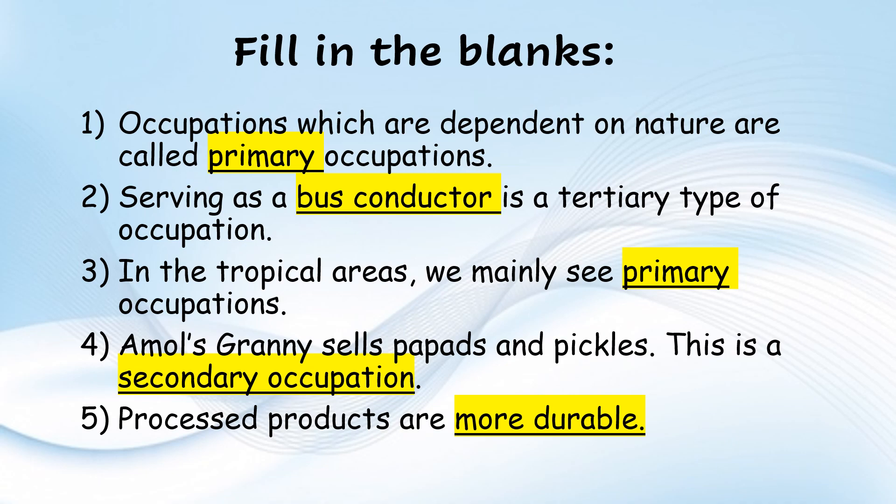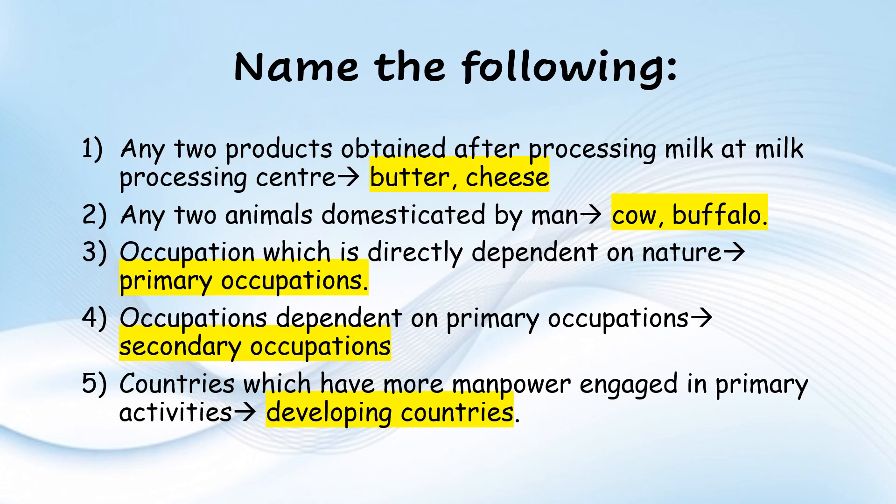Amol's granny sells papads and pickles — this is a secondary occupation. Processed products are more durable, meaning they stay long. Name the following: Any two products obtained from processing milk at a milk processing center — butter and cheese. Any two animals domesticated by man — cow and buffalo. Occupation directly dependent on nature — primary occupation. Occupation dependent on primary occupation — secondary occupation. Countries which have more manpower engaged in primary activities are developing countries, like India.